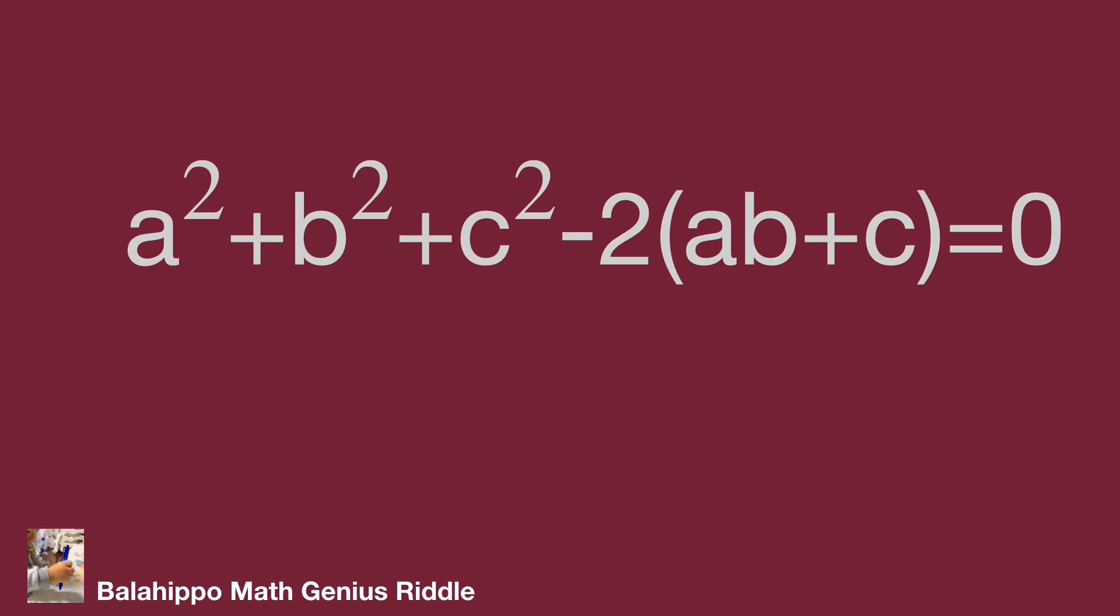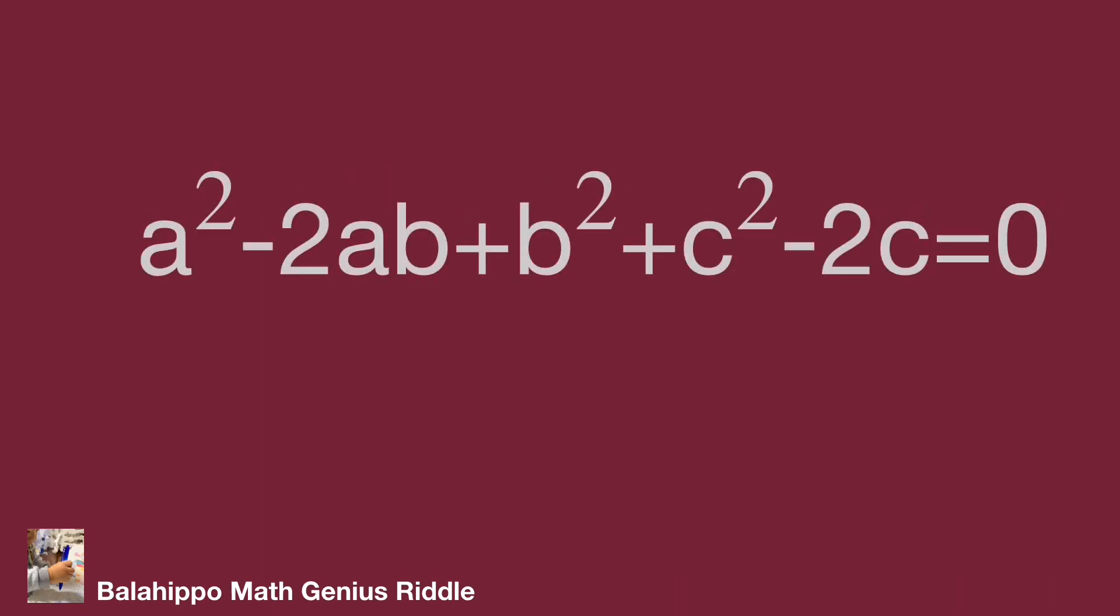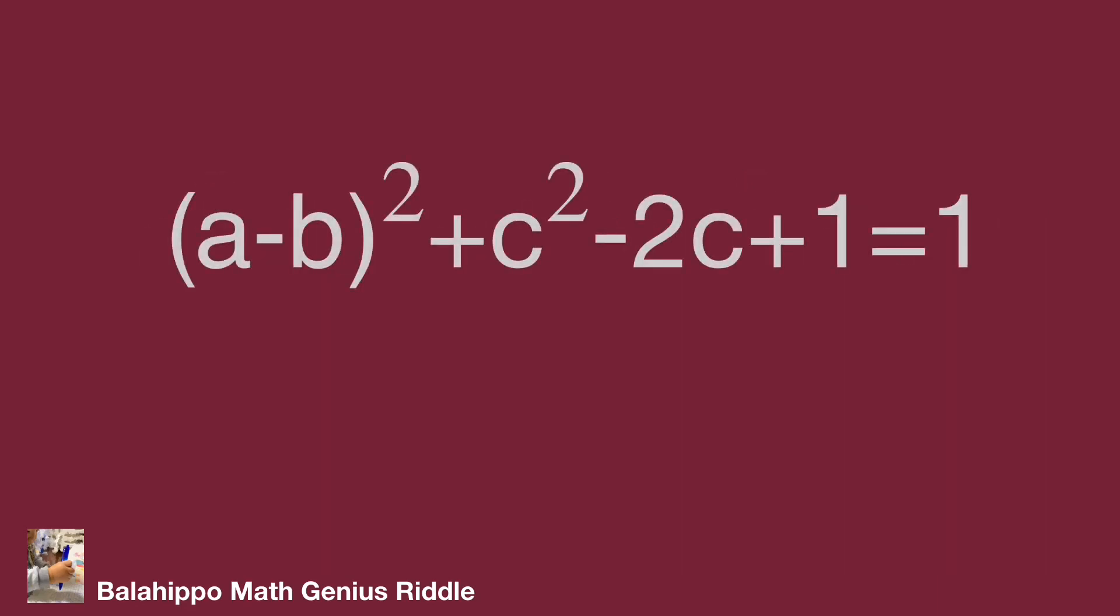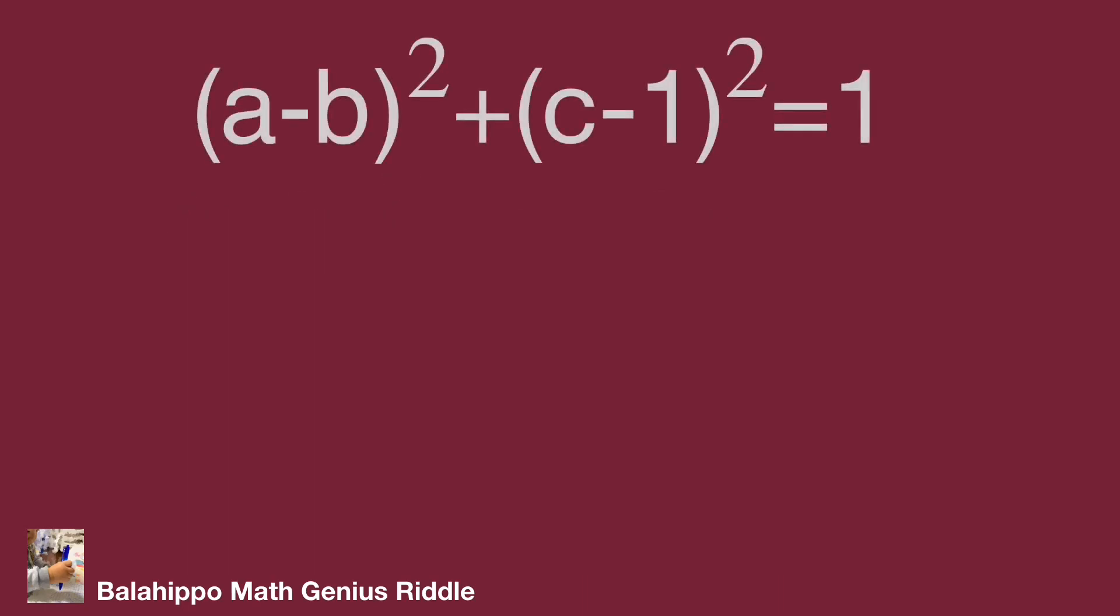Let a² + 2ab + b² as one group equal to (a + b)². Then rearrange another square from c² - 2c. Add one to both sides of the equation. Then it becomes two squares: (a - b)² + (c - 1)² = 1.